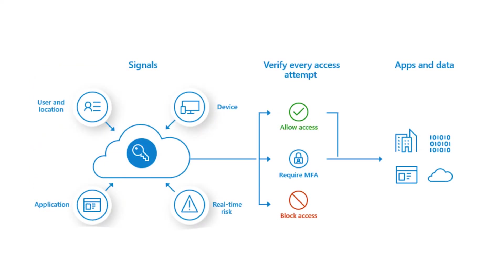We also factor in risk elements. We take those signals, use them as a kind of if statement, and then based on those conditions we say: allow the user access, don't allow the user access, or allow the user access but with certain constraints on it.